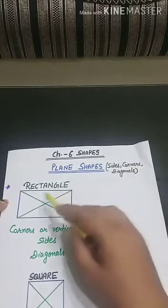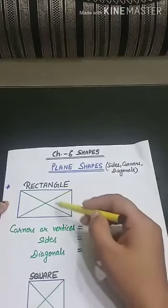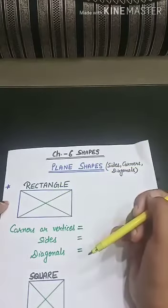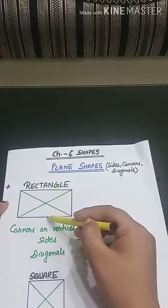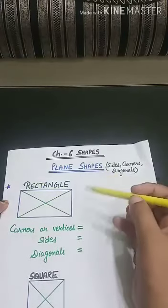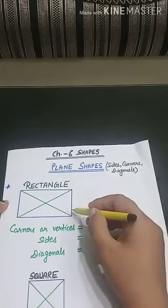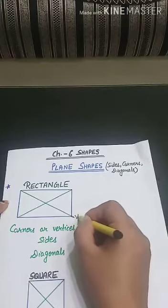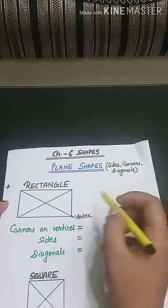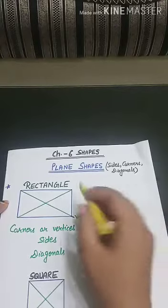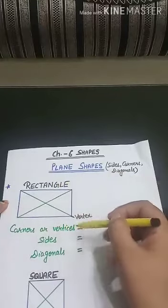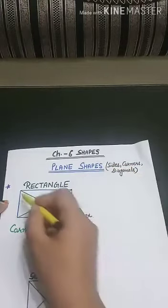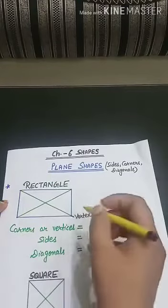First one is rectangle. In a rectangle, the opposite sides are the same — if you measure the sides, you will find that the opposite sides are equal. Now, how many corners or vertices does a rectangle have? A corner is the point at the very corner of the shape — these are also called vertices. Vertex is singular and vertices is plural. Corner and vertices are the same. So, one, two, three, four — a rectangle has four corners.